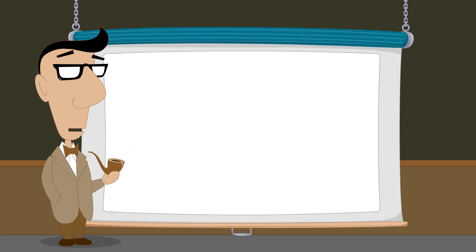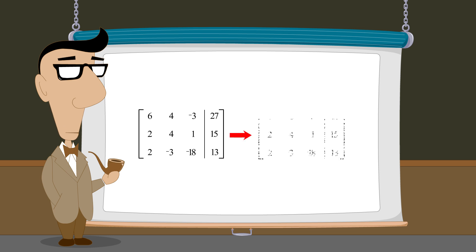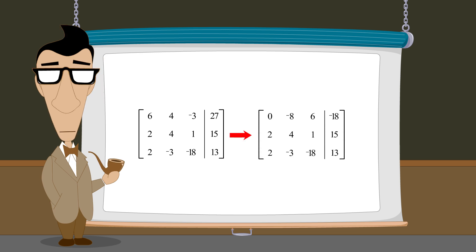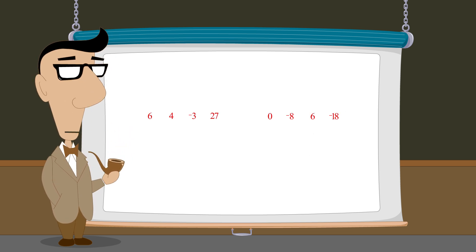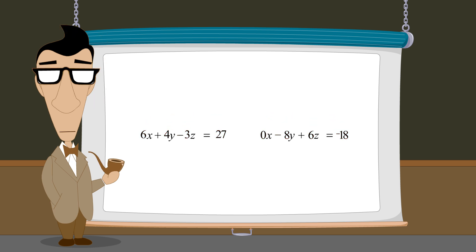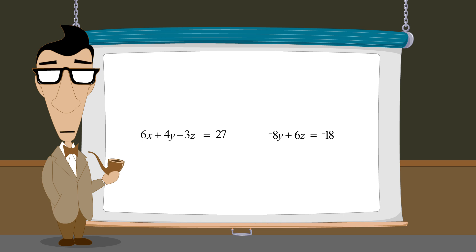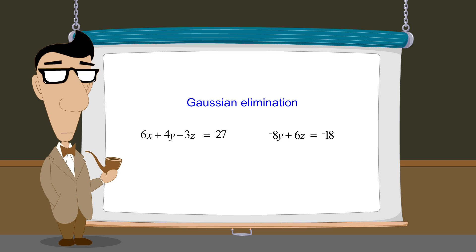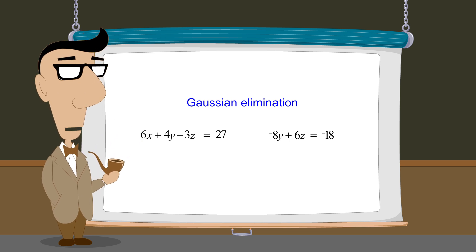In this last example, we transformed the augmented matrix into a new one representing an equivalent system. In this process, the first row was changed and the corresponding equations were different. Since in the transformed equation the x-coefficient had become zero, the variable x was eliminated. In the next lecture, we will introduce a method called Gaussian Elimination which uses the three elementary row operations to transform and simplify augmented matrices, eliminating variables in the corresponding system of equations.